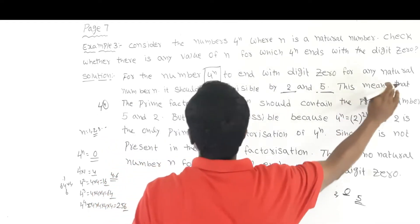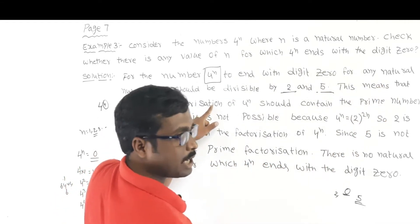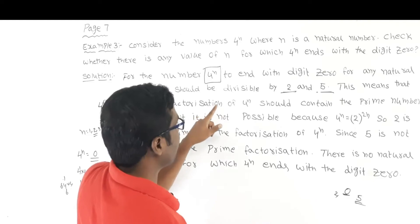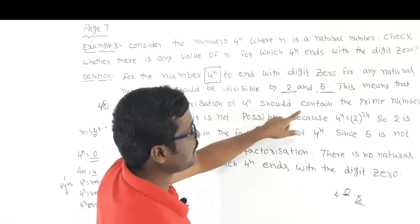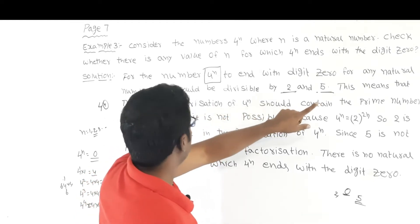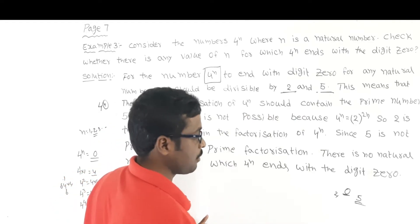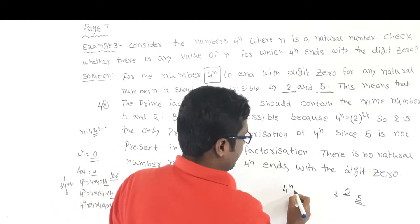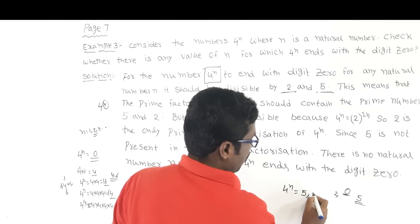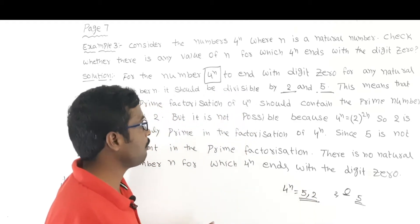This means that the prime factorization of 4 to the power of n should contain the prime number 5. Both 5 and 2 are compulsory in the prime factorization for the number to end in 0.